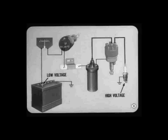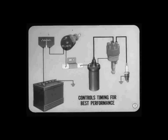What does the ignition system do? It boosts the low voltage available at the storage battery to the high voltage needed at the spark plug to fire the air-fuel mixture in the combustion chamber. But that's only part of the job. The ignition system must also control the timing of the spark for the best performance under all operating conditions.